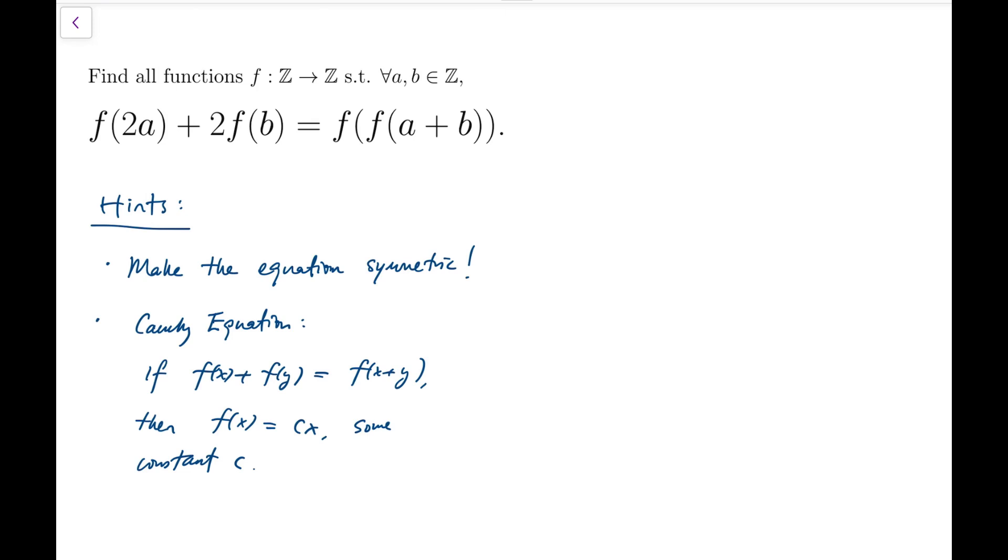A tool that I'm going to use is called the Cauchy equation. If I can reach some form like f of x plus f of y equals f of x plus y, then I can immediately deduce that f of x is just a linear function with zero constant term, so it's just a constant times x. This can actually be very easily proven under the set of integers because we can quickly get this by induction.